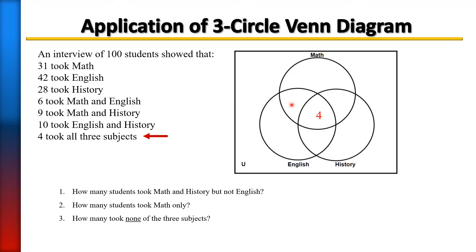That would be math and English, math and history, and English and history. We'll start with math and English. Six students took math and English, so we have to subtract the 4 that's already in that circle. Six take away 4 would give us 2, so that means there are 2 students who took math and English.